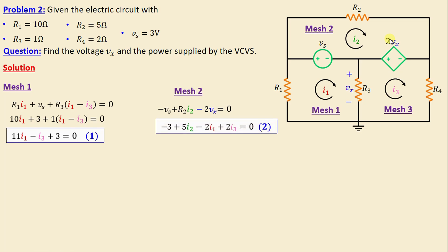According to Ohm's law, vx is equal to R3 multiplied by (i1 minus i2). Substituting into the mesh two equation, we obtain: negative 3 plus 5 i2 minus 2 i1 plus 2 i3 is equal to zero.